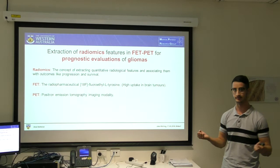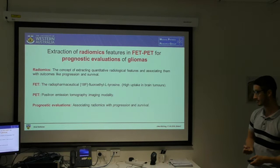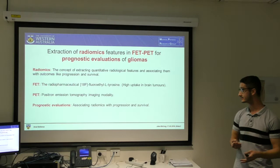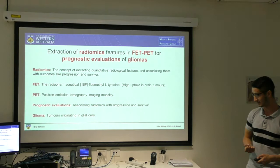Prognostic evaluations — this is just using the radiomics features and associating them with how the patient will progress throughout the disease and their survival as well. And glioma is simply a tumour originating in glial cells.